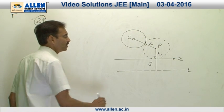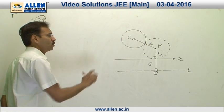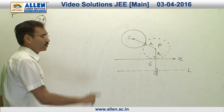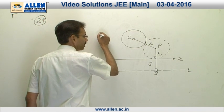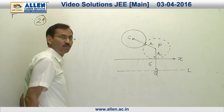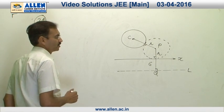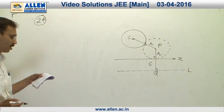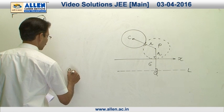So, PC and PQ are equal. P is a variable point whose distance from a fixed point and a fixed line are equal. Therefore, the locus of P will be a parabola. For that parabola, this point will become the focus and the line will become the directrix. That is why the locus of P is a parabola, and our correct option is 1.